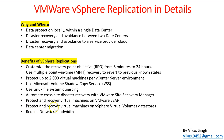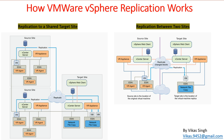VMware vSphere Replication also supports virtual machines running on VMware vSAN and vSphere Virtual Volumes (vVols) datastores. It can also reduce replication network bandwidth through compression of network traffic as data syncs from source to destination. Additionally, you can encrypt replication traffic, so whenever you are replicating a machine from source to destination, the replication can be fully encrypted.